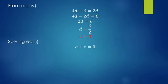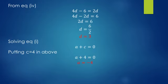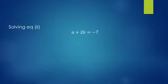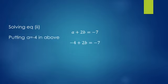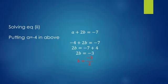Solving equation 1: a + c = 0. Putting c = 4: a + 4 = 0, so a = -4. Solving equation 2: a + 2b = -7. Putting a = -4: -4 + 2b = -7. Moving -4 to the right side, it becomes positive: 2b = -7 + 4 = -3. So the result is b = -3/2.